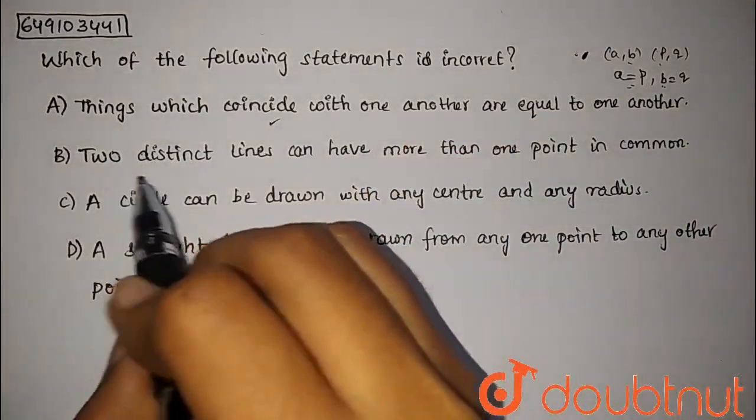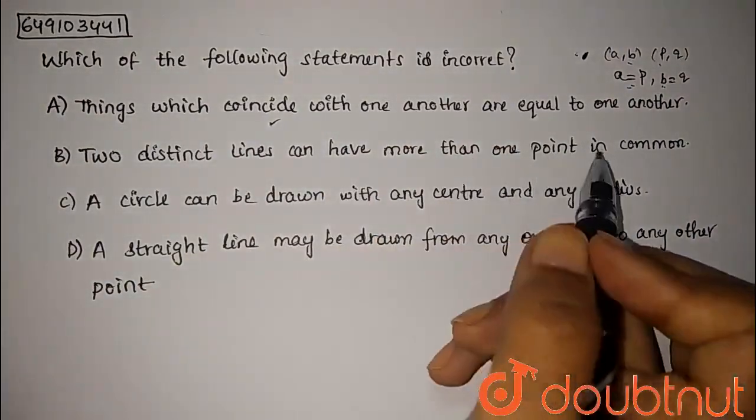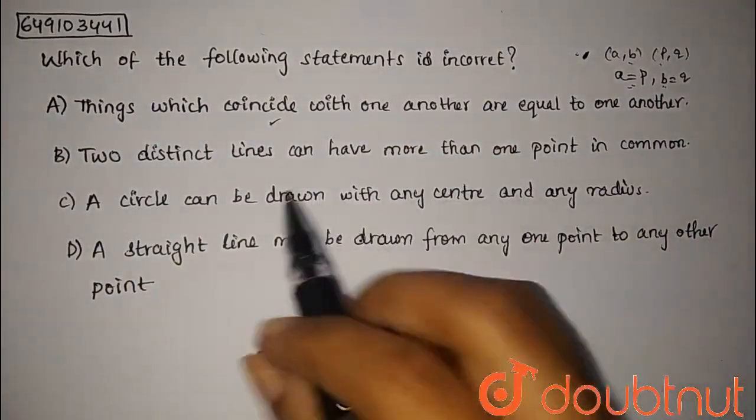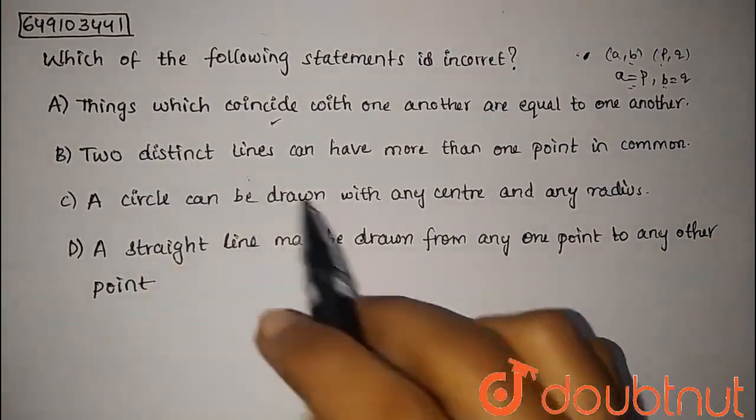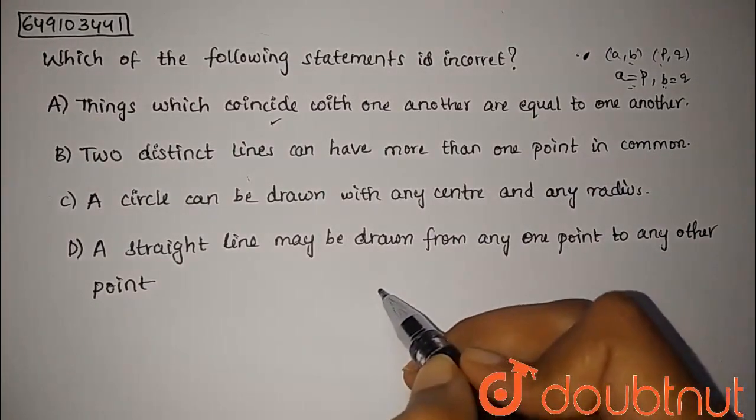Let's see the second statement. Two distinct lines can have more than one point in common. Here are two distinct lines. The definition of distinct lines is that they are either parallel lines or lines that intersect at one point.